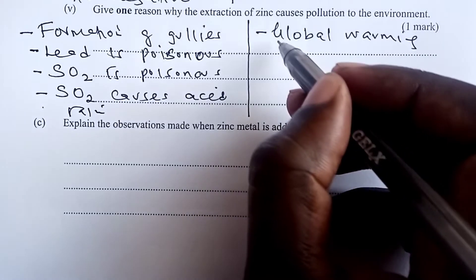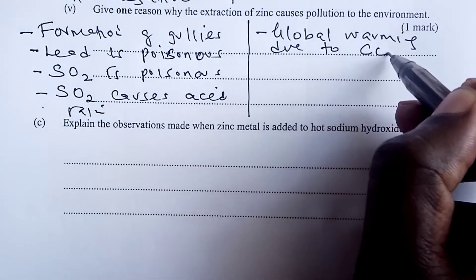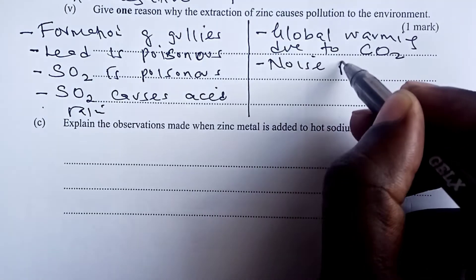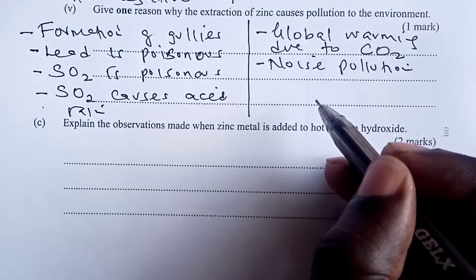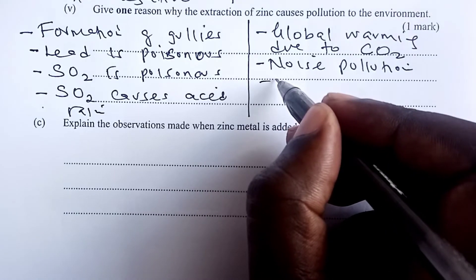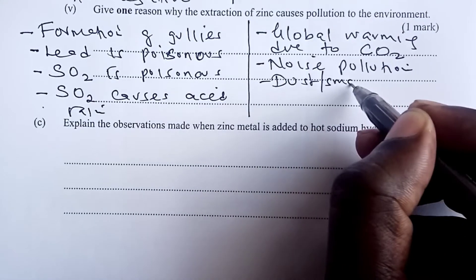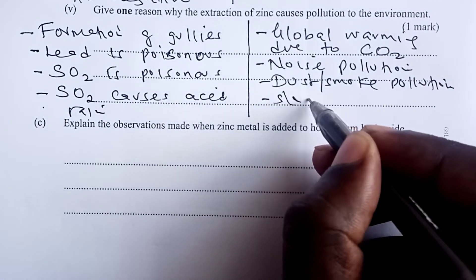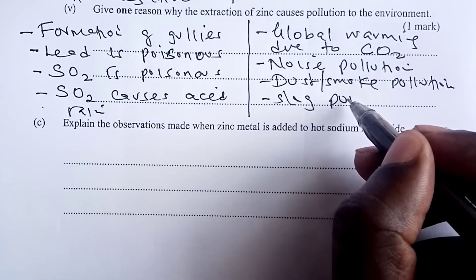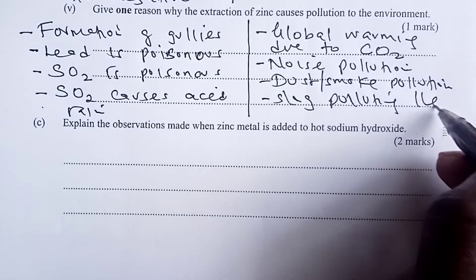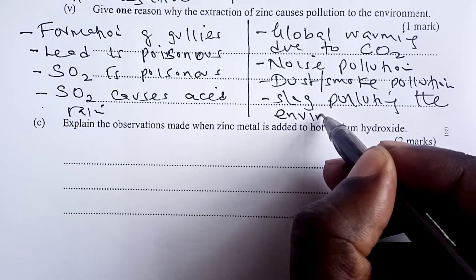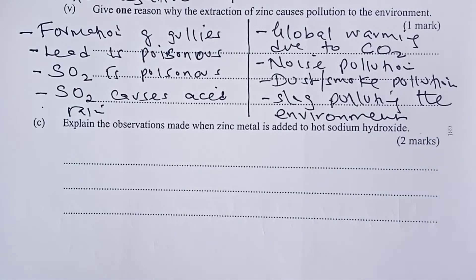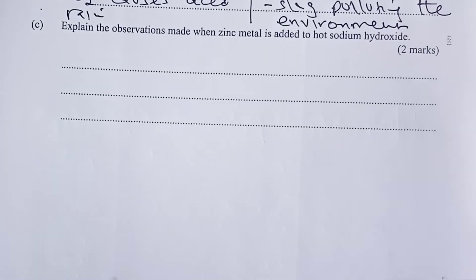Another reason is that there would be global warming, and global warming is because of carbon-4-oxide being produced. We have noise pollution from extraction of zinc. We also have dust, smoke, pollution, and we also have slag poisoning, or rather polluting the environment. All these would be the reason why extraction of zinc causes pollution of the environment.